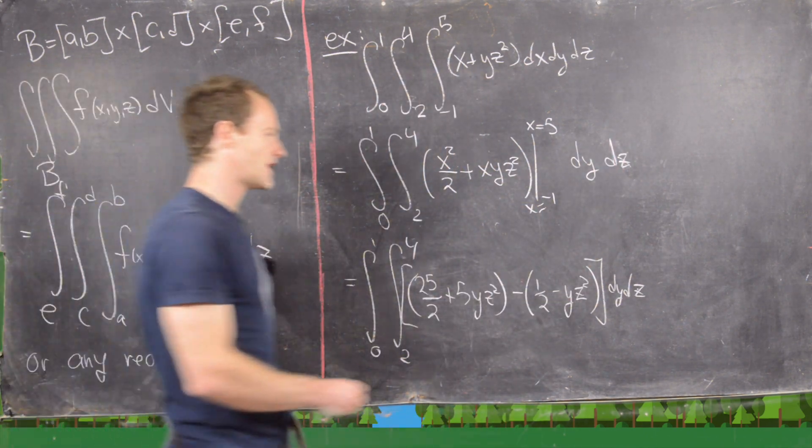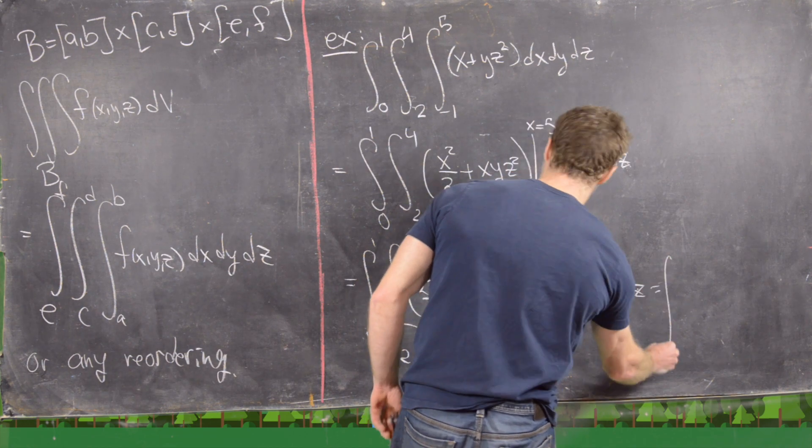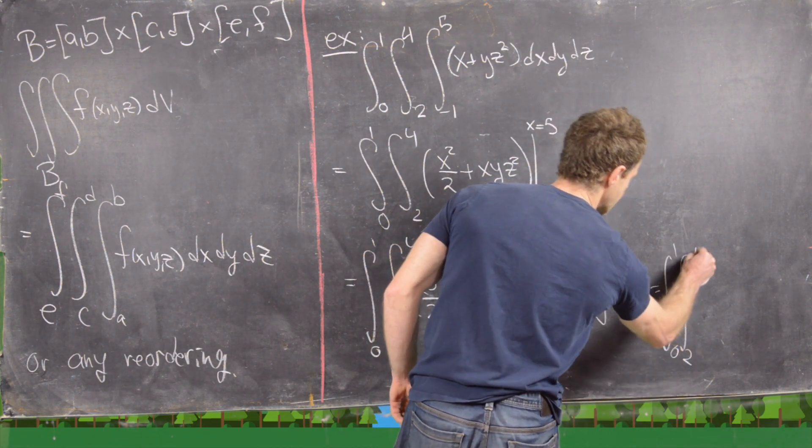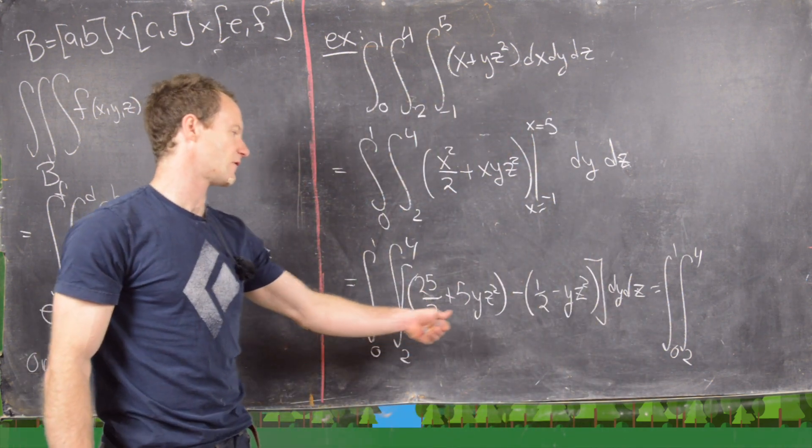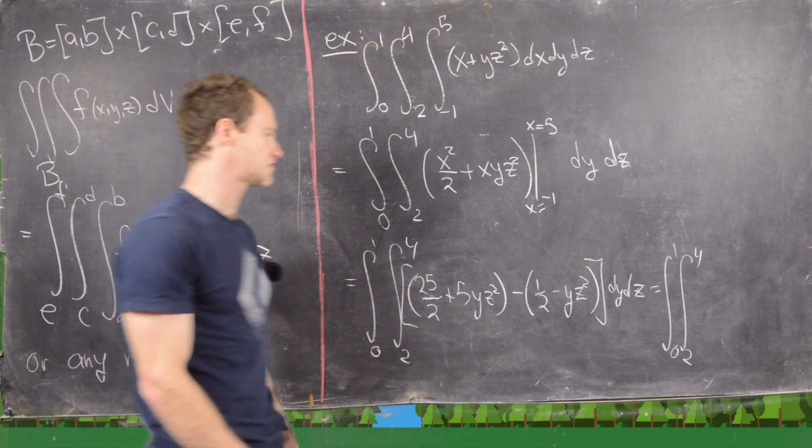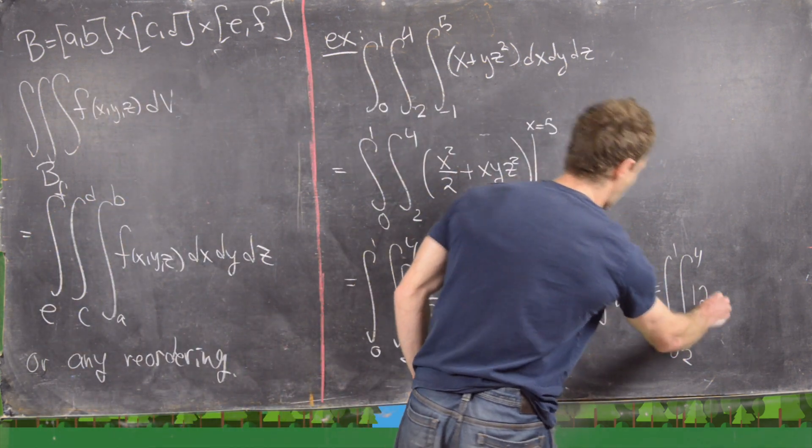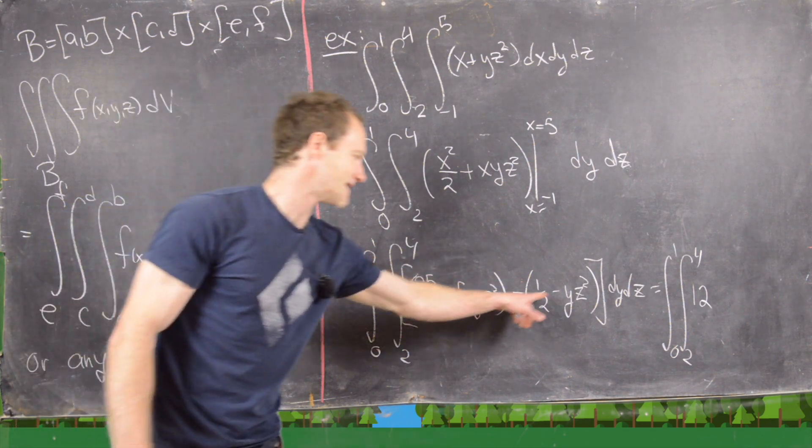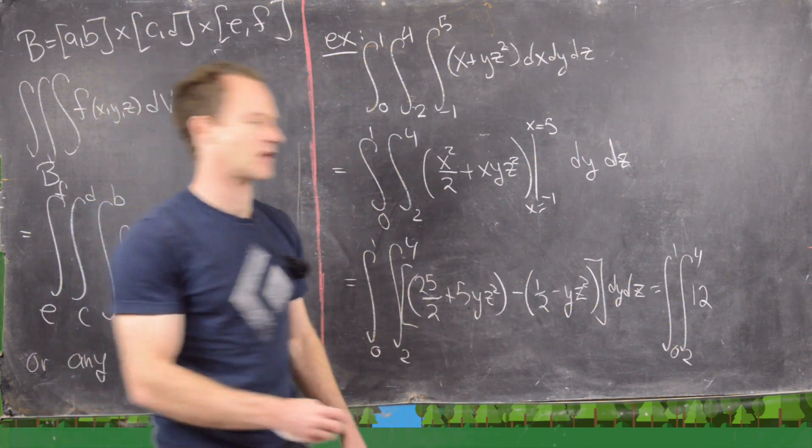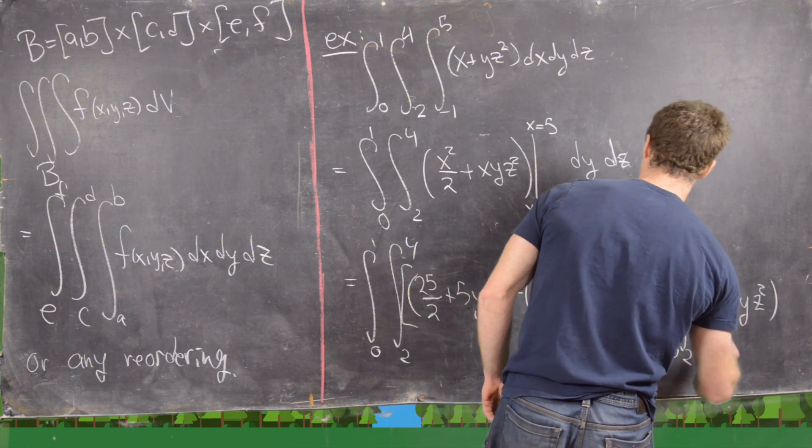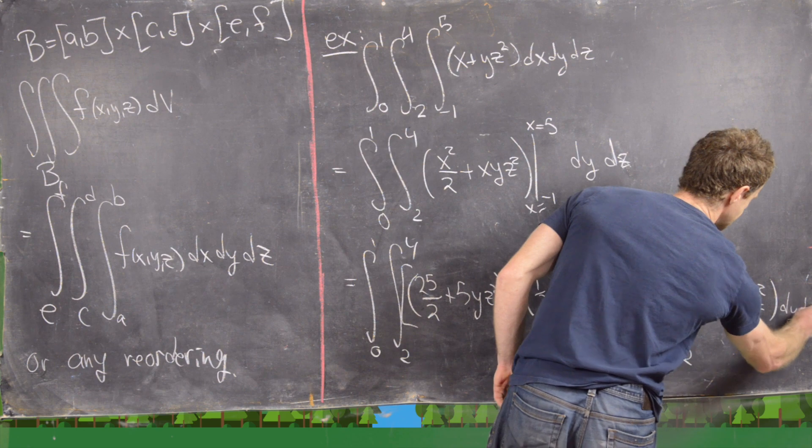But now that simplifies a bit. So that's going to simplify to the integral from 0 to 1, 2 to 4. And now notice we have 25 over 2 minus 1 over 2, so that'll be 24 over 2, which is the same thing as 12. And then we have 5y z squared minus a negative y z squared, so that'll be plus 6y z squared. And now we have dy, dz.